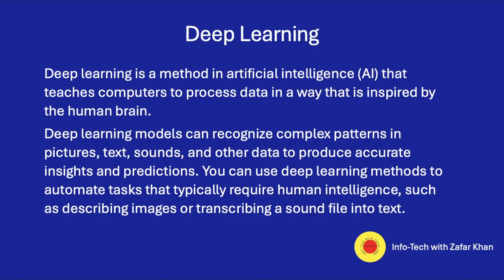Now, deep learning. Deep learning is a method of artificial intelligence that teaches computers to process data in a way that is inspired by the human brain. Deep learning models can recognize complex patterns in pictures, text, sound, and other data to produce accurate insights and predictions. You can use deep learning methods to automate tasks that typically require human intelligence, such as describing images or transcribing a sound file into text.